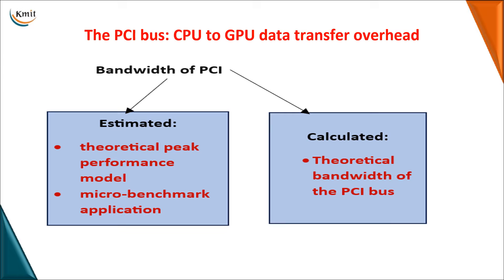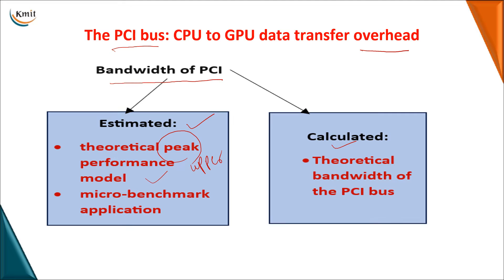When using the PCI bus, some amount of overhead is involved in the communication. To improve the speed of your GPU by overcoming these overheads, one first parameter we will use is bandwidth. For the bandwidth of the PCI, you can calculate it using the estimated method or the calculated method. In the estimated method, you develop a model and set up an upper bound or peak bound for your bandwidth.